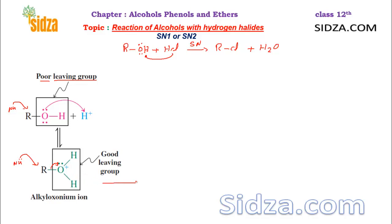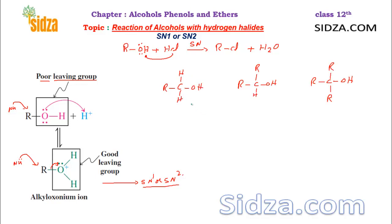After protonation you get a better leaving group and substitution is possible. Whether this alcohol undergoes SN1 or SN2 mechanism depends on what type of alcohol it is — whether it is primary, secondary, or tertiary. Here we have three alcohol molecules: a primary (one-degree) alcohol, a secondary alcohol, and a tertiary alcohol. After protonation of the hydroxide group, the nucleophile can attack on that carbon and replace the water.